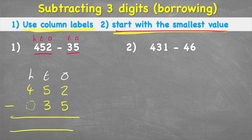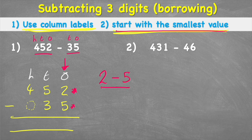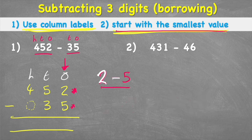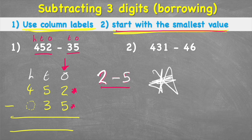Starting with the smallest value in the ones column, my question says two subtract five. This is very important: the number on top always goes first and the number on the bottom goes second. Many people flip it and do five subtract two to get three, but that is the wrong answer. You must do it in order — top number first, bottom number second — because we are taking five away from two.